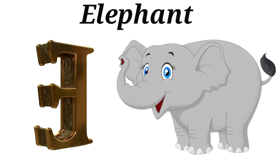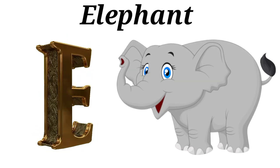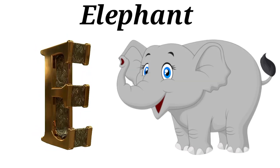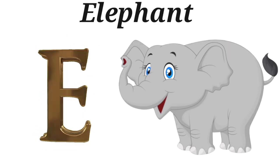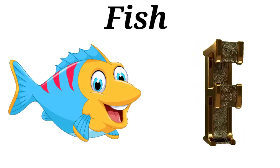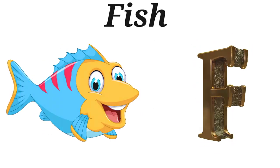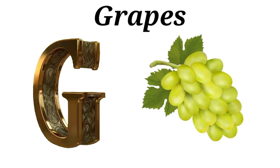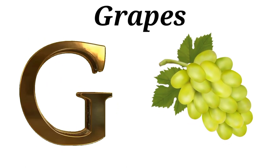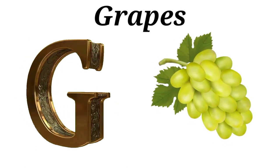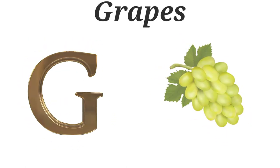E is for Elephant. E, E, Elephant. F is for Fish. F, F, Fish. G is for Grapes. G, G, Grapes.